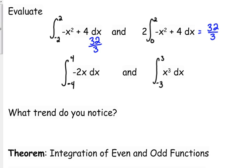Now without picking up your calculator, what do you know about the function negative x squared plus 4? First of all, what shape is it? It's a parabola. Which way does it open? Down, because it's negative x squared.